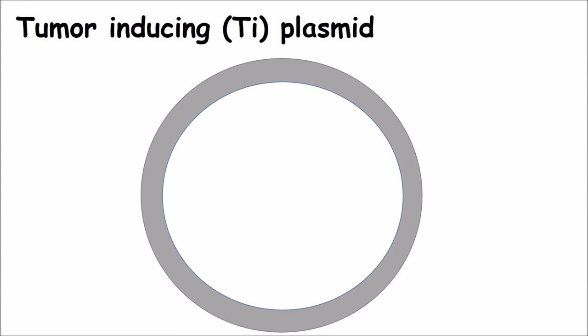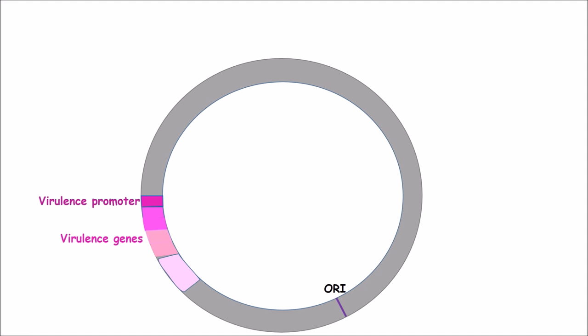Let's look more closely at the tumor-inducing, or Ti, plasmid. This is a very large plasmid, containing almost 200 genes and over 200,000 base pairs. Like all plasmids, it contains an origin of replication so that the plasmid can be copied. Like most bacteria, many of the genes are organized into operons, so that the activation of one promoter triggers the transcription and translation of several gene products involved in the same process. There are a set of virulence genes required for infecting and transferring DNA to the plant, and a separate operon containing genes required to metabolize the opines the plant will make as food for the bacteria.